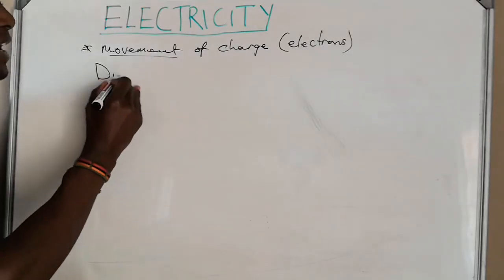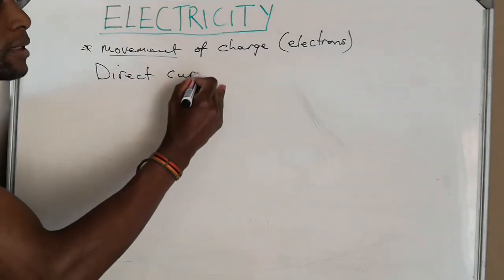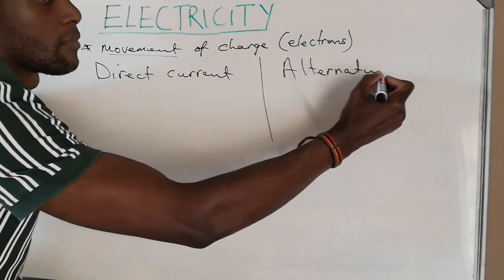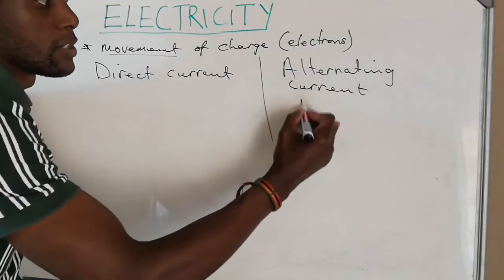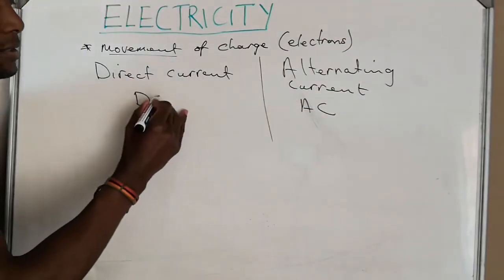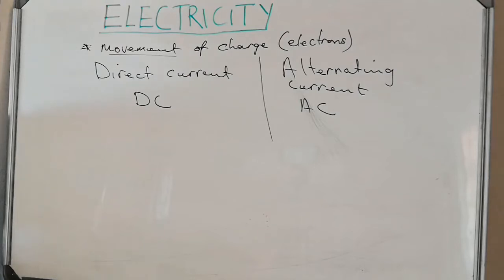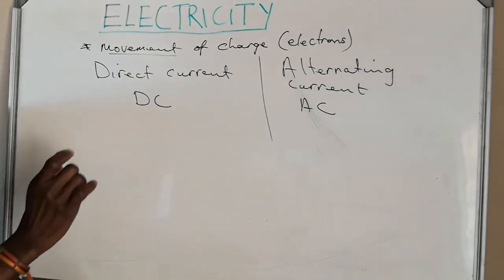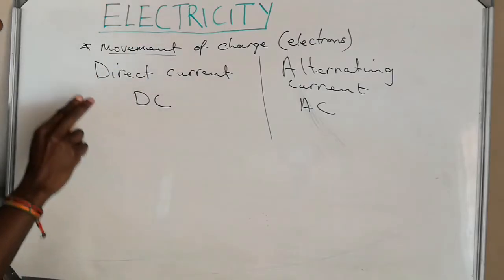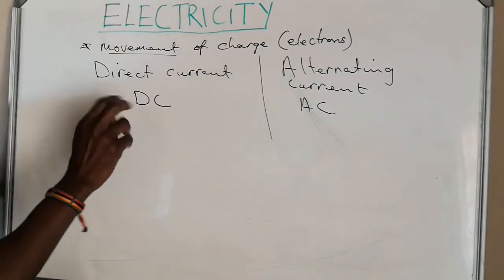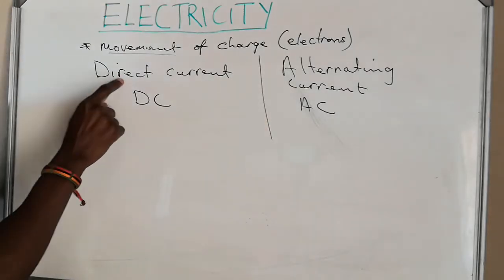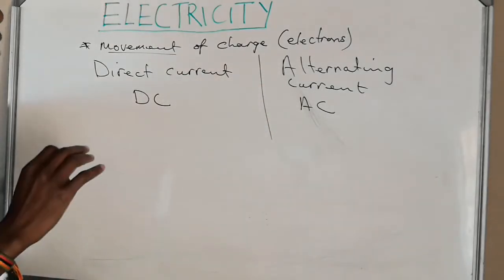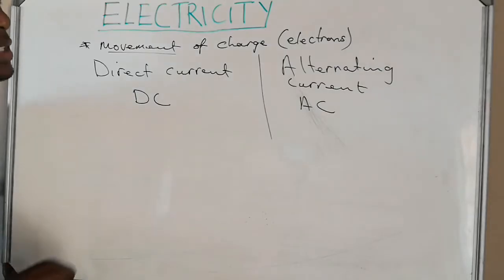Now before we go into more detail, bear in mind that there are two types of electricity. There is direct current and there is alternating current. Direct current is called DC. Direct current means it is flowing in one direction. Alternating current means it is changing directions. We shall not go into details about the difference of those two for now, but just know that there are two types of electricity: DC electricity and AC electricity. A detailed explanation will be done in other videos to come.